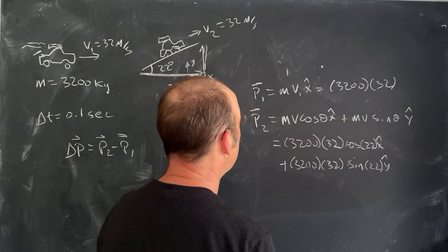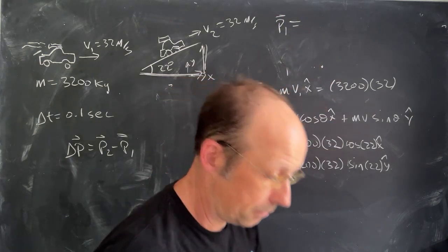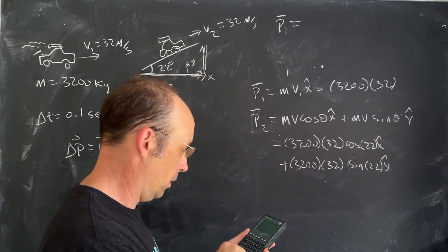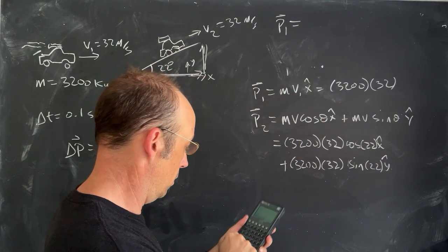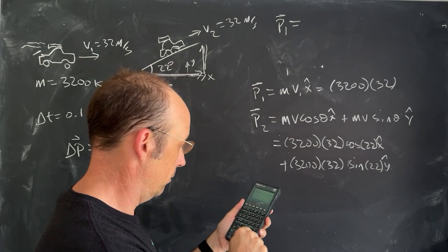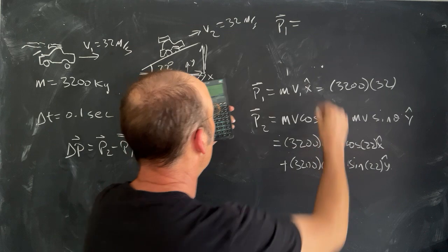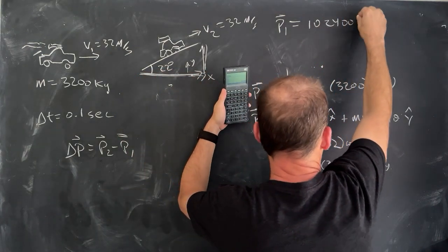Okay, so let's get these as numbers because it will look prettier, and I'll put them up here. So, P1 calculator time. 3,200 times 32. And I get 102400 x-hat.